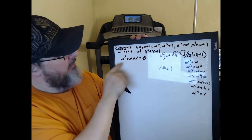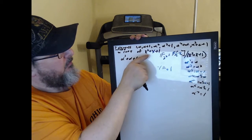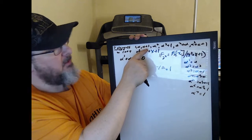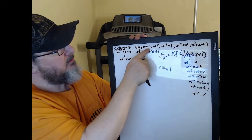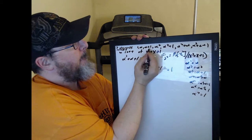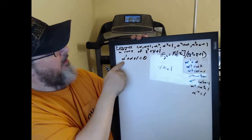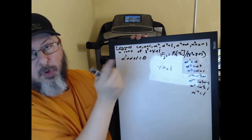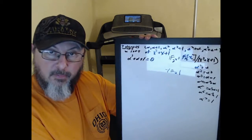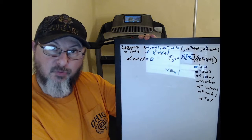So that means that alpha — x cubed plus x plus 1 — so alpha to the third plus alpha plus 1 is 0. That's what it means to be a root.